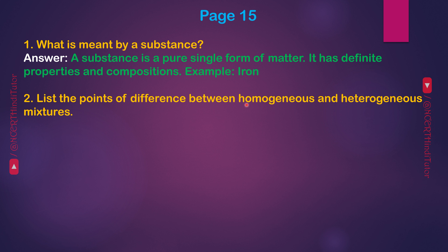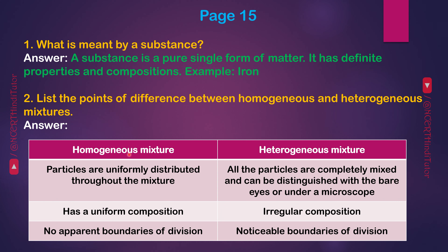Question 2: List the points of difference between homogeneous and heterogeneous mixtures. Answer — Homogeneous mixtures: particles are uniformly distributed throughout the mixture; has a uniform composition; no apparent boundaries of division. Heterogeneous mixtures: all the particles are completely mixed and can be distinguished with the bare eyes or under a microscope; irregular composition; noticeable boundaries of division.